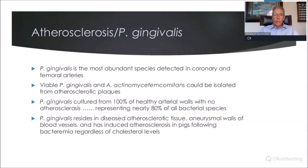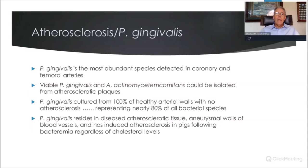Looking at atherosclerosis and specifically P. gingivalis — the most studied pathogen in this area: P. gingivalis is the most abundant species detected in coronary and femoral arteries, and it's viable. From the Ford study, P. gingivalis was cultured from 100% of healthy arterial walls in patients with periodontal disease, and accounted for nearly 80% of all bacterial species found. So either it has the ability to block other species from invading the arterial walls, or it's just the most pathogenic and best able to survive in those walls.